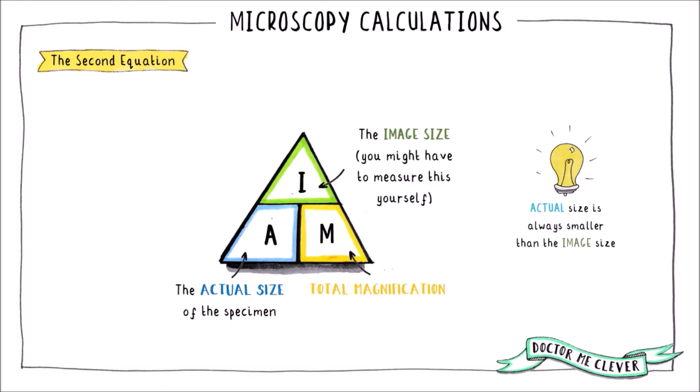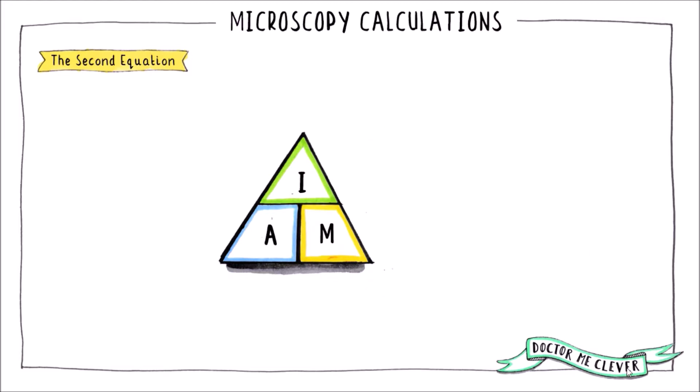Finally, M stands for total magnification. This is given as a number followed by an X. So most of you should be familiar with how to use these triangles but I will just whisk through the three equations that are hidden within this triangle.